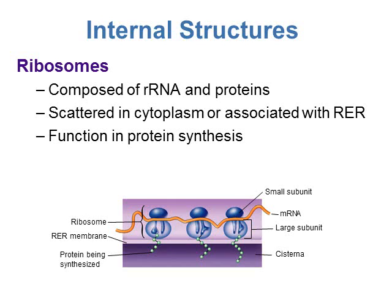Ribosomes are composed of ribosomal RNA (rRNA) and proteins. The rRNA is made in the nucleolus inside the nucleus. Ribosomes can be scattered freely in the cytoplasm or attached to the rough endoplasmic reticulum — that attachment is what makes the rough ER look rough and gives it its name. Ribosomes function in protein synthesis, creating all different types of proteins including enzymes and proteins used for cell protection. You can review Chapter 2 for more on how proteins are created and their different functions.